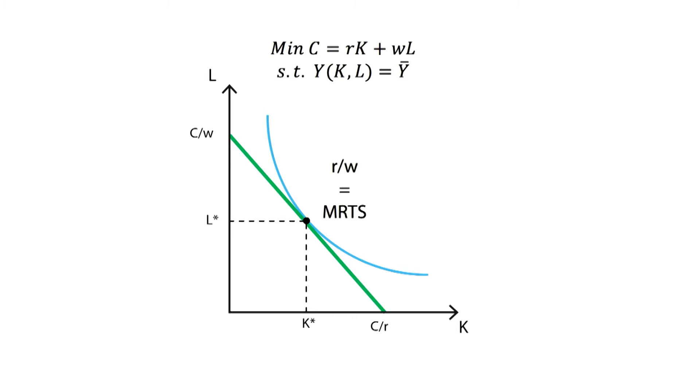At this point, the interest rate divided by the unitary wage paid, which corresponds to the slope of the isocost line, will be equal to the marginal rate of technical substitution, which is equal to the slope of the isoquant.